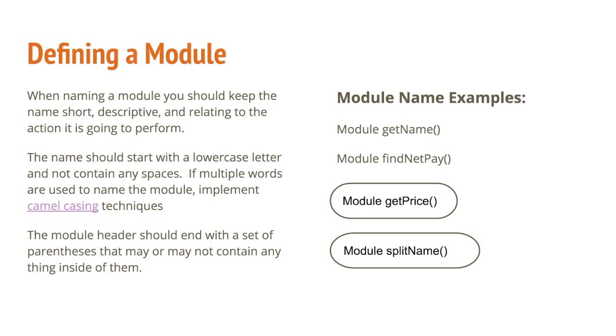So modules are pretty simple to make. First thing we need to talk about is how to define it. When you name a module, I like to keep the words verb-like in nature, something like get price or split name. We should always start a module with a lowercase letter. And then if it requires more than one word, you can camel case like I did here in get price and split name, where you simply capitalize every subsequent word. Or you can use underscores, but what you cannot do is use spaces in module names. One thing you'll also see is that you end all your modules with a set of parentheses. These parentheses may or may not contain information.